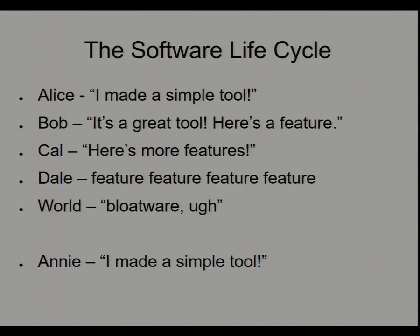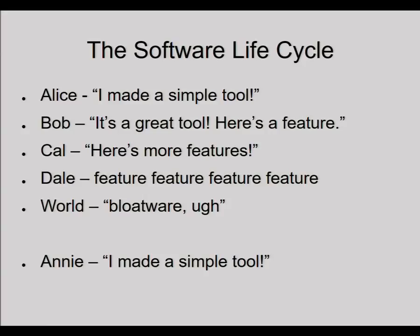There's a really common pattern to dealing with all these different tools and protocols. Someone says 'this is terrible, I'm going to write a simple tool to deal with it.' Then people send more features, feature after feature, and eventually the whole world goes 'this is terrible, this is awful, and what we really need is a simple tool to do this thing.' This is the real software development life cycle — waterfall, agile, whatever — this is what we actually do.